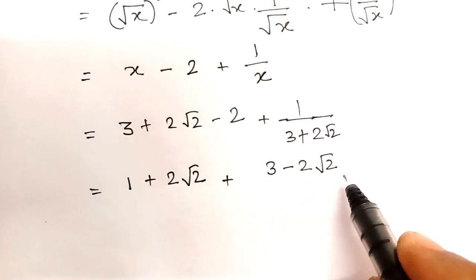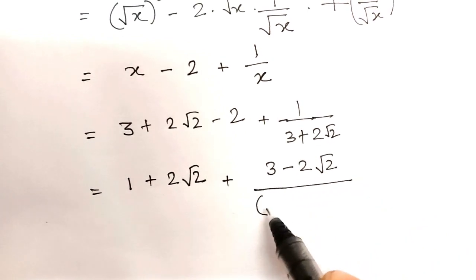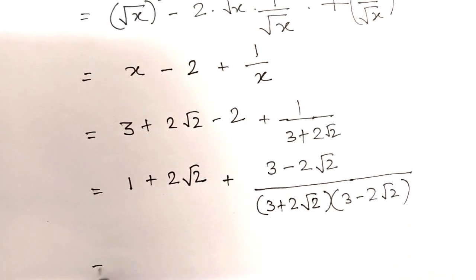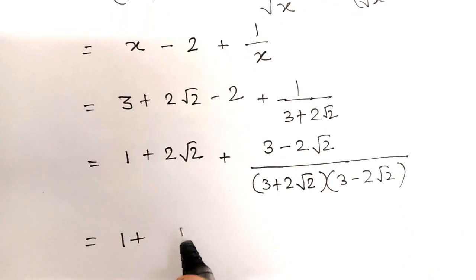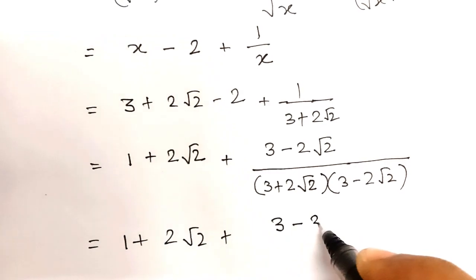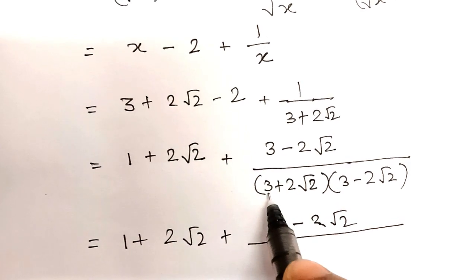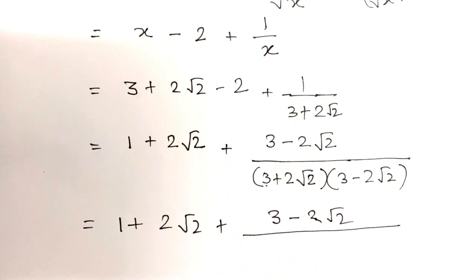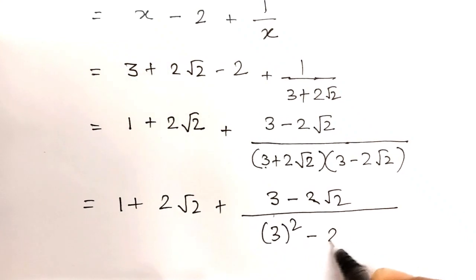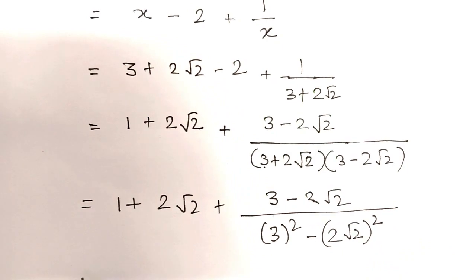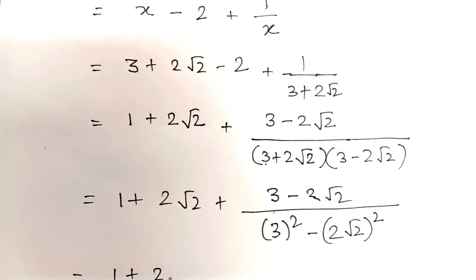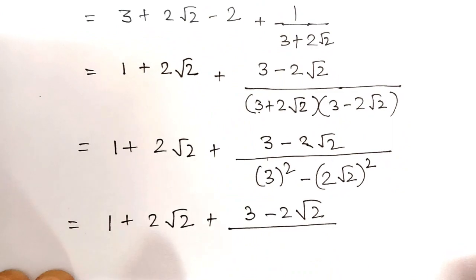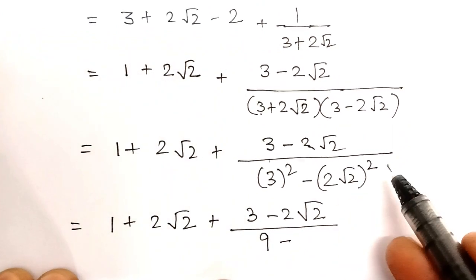Here we will multiply with 3 minus 2 root 2 on top and bottom. So it becomes 1 plus 2 root 2 plus 3 minus 2 root 2 in the numerator. At the denominator it will be a plus b into a minus b, which is a squared minus b squared — that is 3 squared minus 2 root 2 squared. This gives 9 minus 8, which equals 1, and 2 root 2 squared is 8.